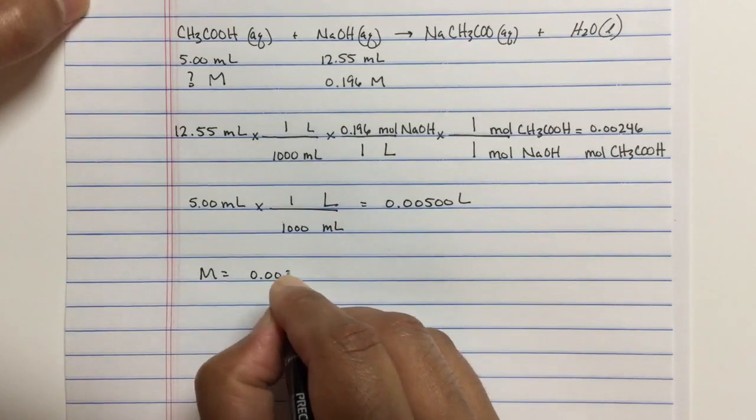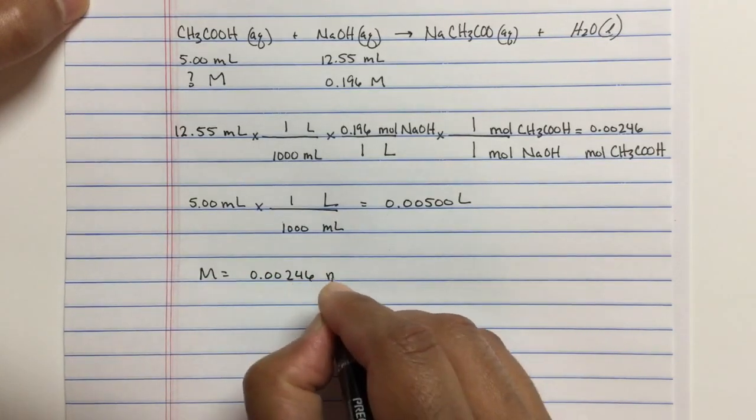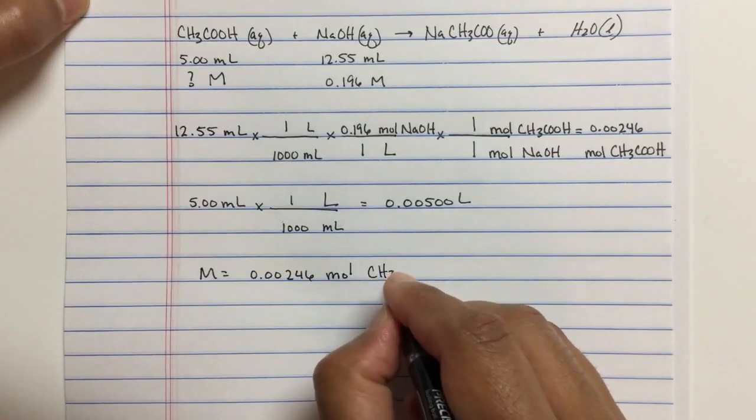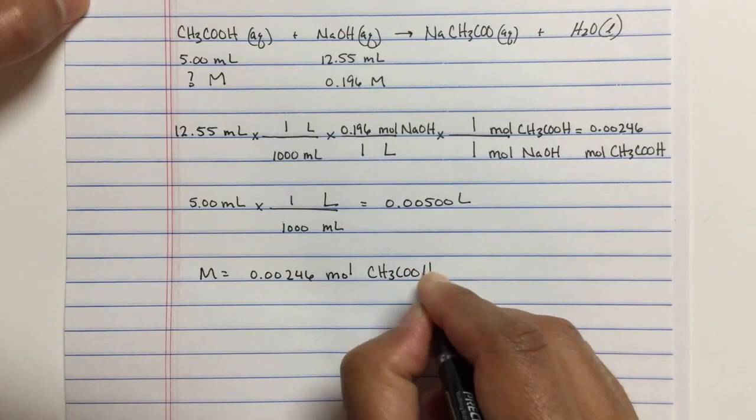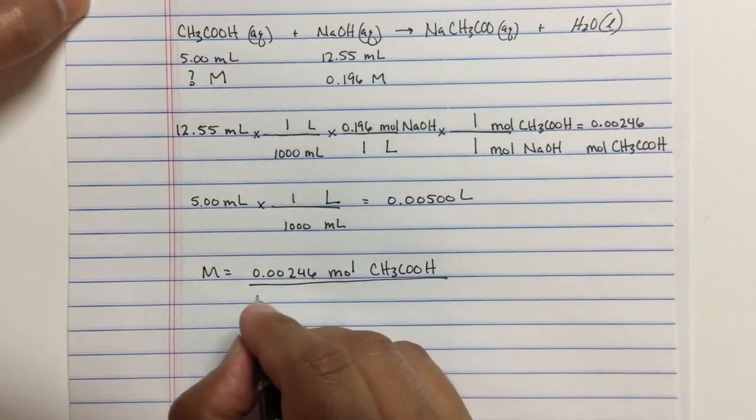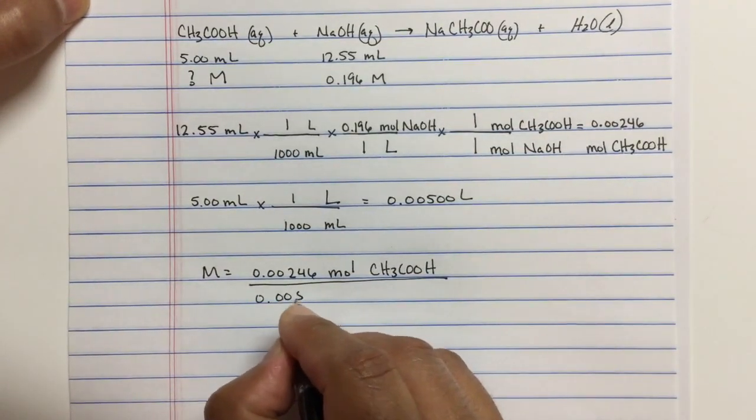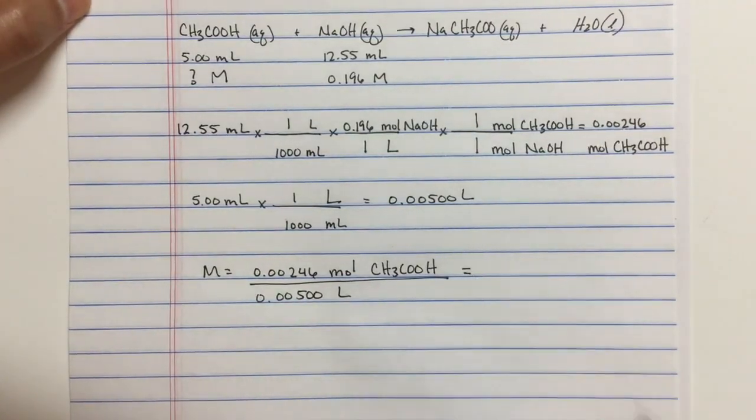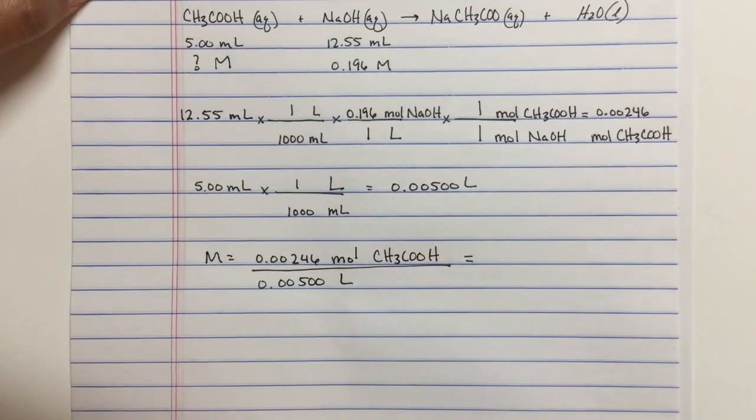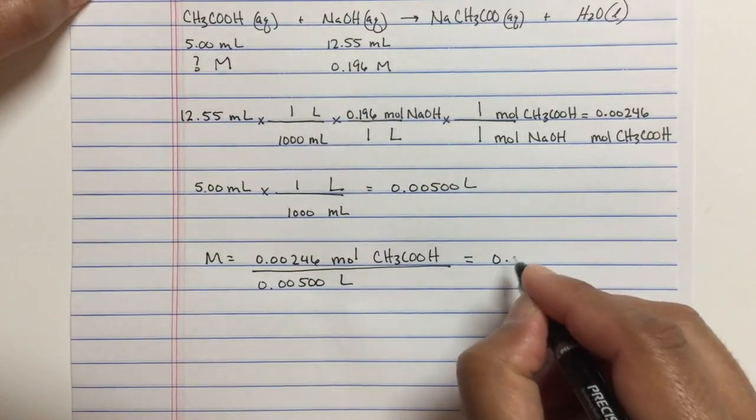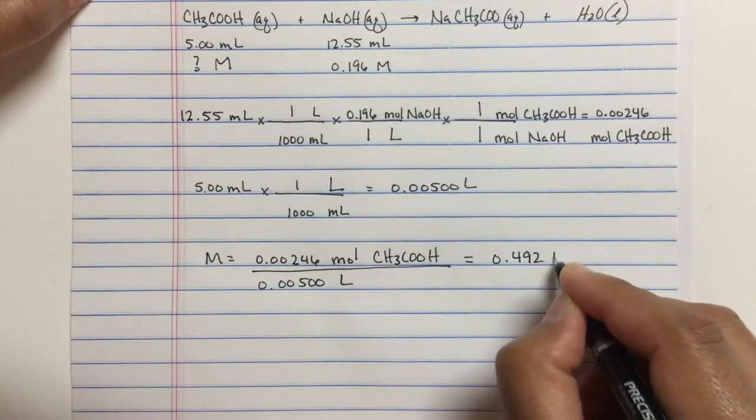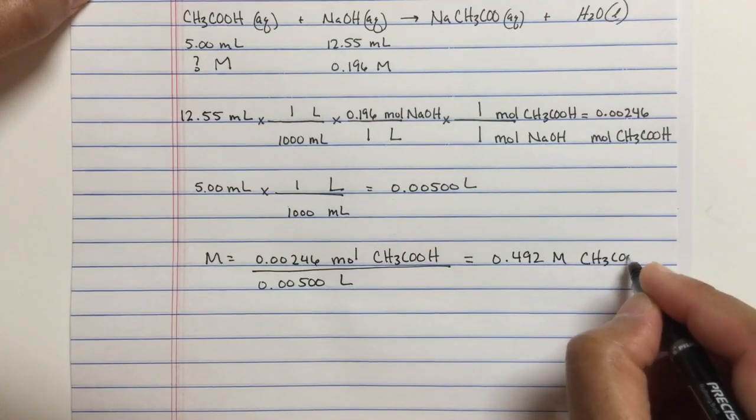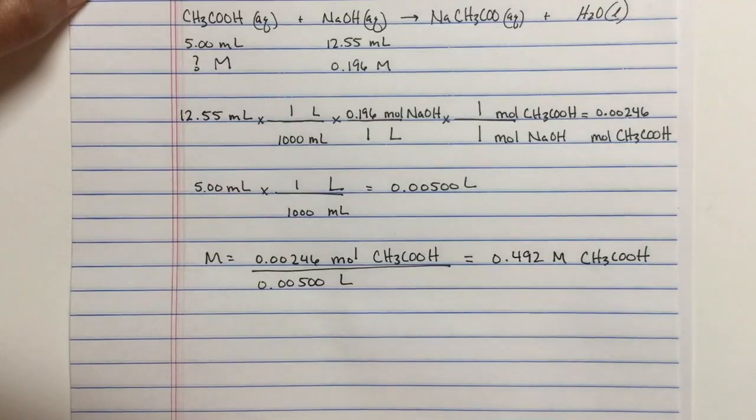Okay. So now we can get the molarity. The moles of acetic acid divided by the volume of the acetic acid solution that was used. And so this answer is 0.492 molar acetic acid solution.